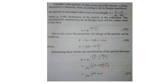Now 1/lambda can be replaced: since lambda equals h divided by px, then 1/lambda equals px/h. Substituting, px comes to the numerator, and h and h cancel, and 2π and 2π cancel. So what remains is psi equals A e to the power minus i by h-bar, times (Et − px).